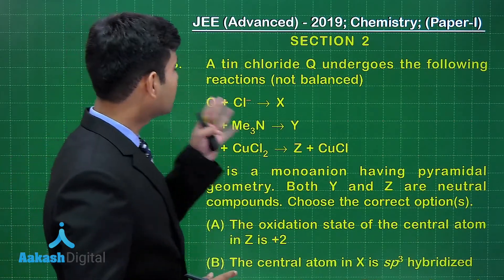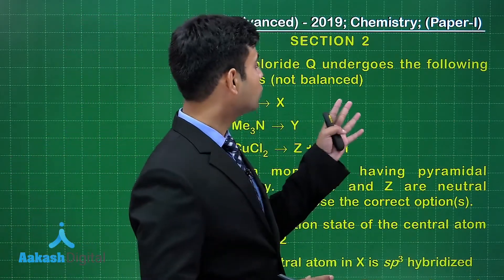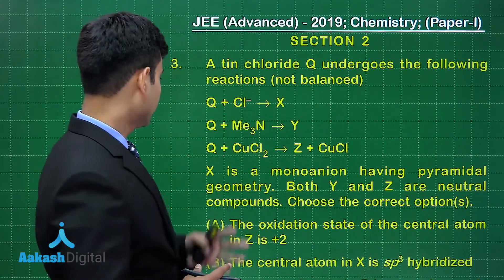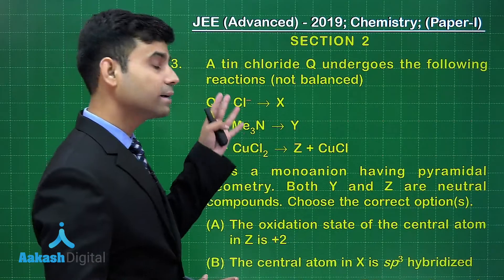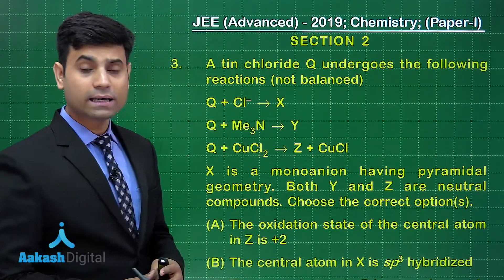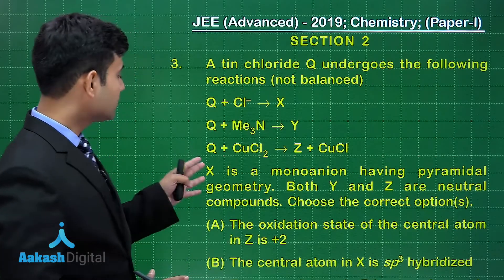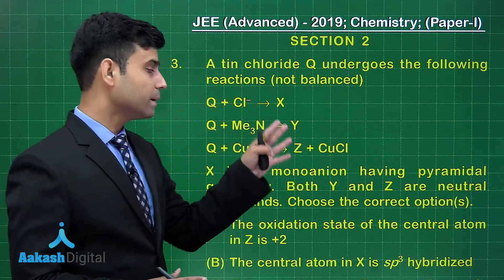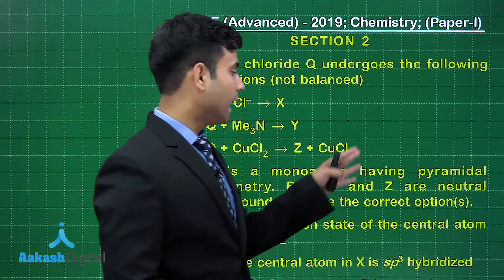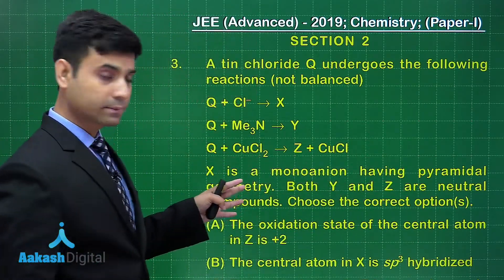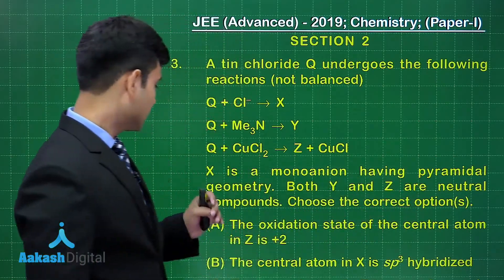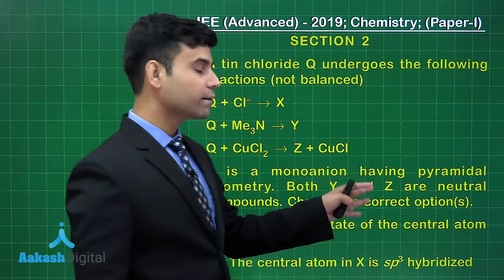A tin chloride Q undergoes the following reactions, which are not balanced. Q plus Cl⁻ gives X. Q plus trimethylamine gives Y. Q plus CuCl₂ gives Z plus CuCl. X is a monoanion having pyramidal geometry. Both Y and Z are neutral compounds. Choose the correct options.